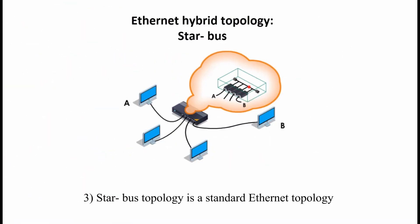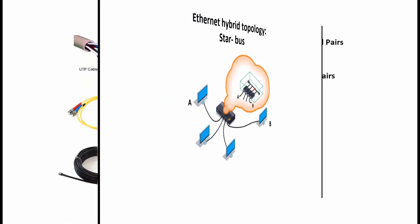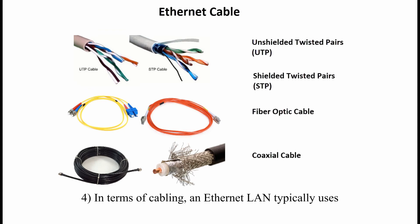3. Star-bus topology is a standard Ethernet topology. 4. In terms of cabling, an Ethernet LAN typically uses UTP, STP, fiber optics, and coaxial cable.